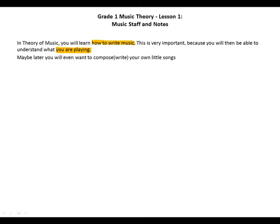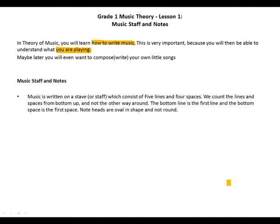After you've learned this theory, you will be able to understand what you are playing, and maybe at a later stage you'll even want to compose your own songs. Music is written on a staff, which consists of five lines and four spaces. We count the lines and spaces from the bottom up. The bottom line is the first line and the bottom space is the first space. Remember that our note heads are oval in shape and not round.